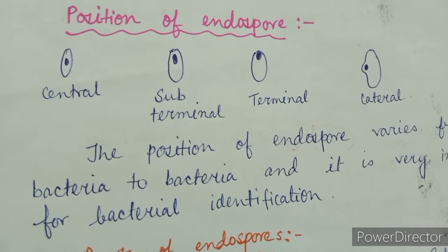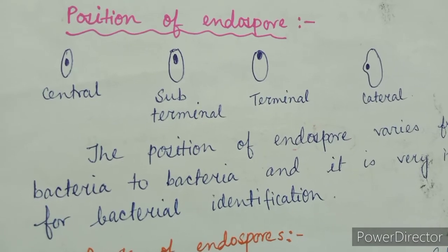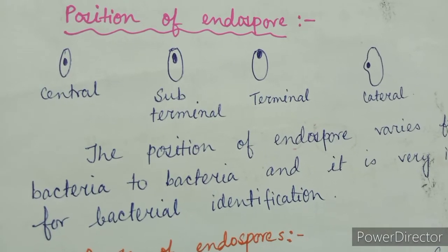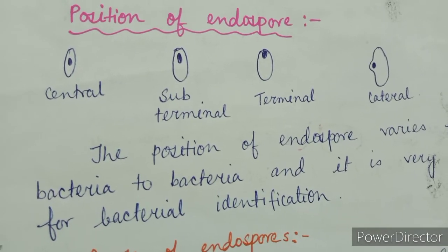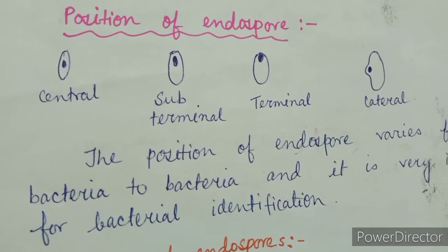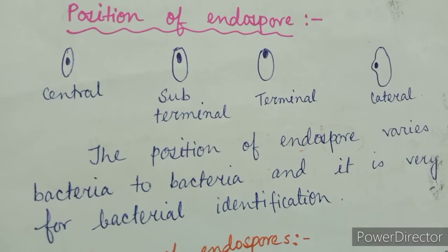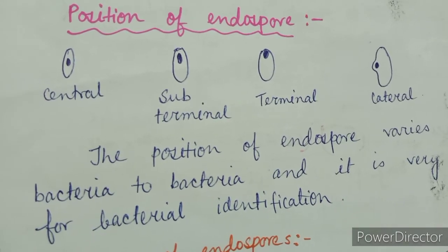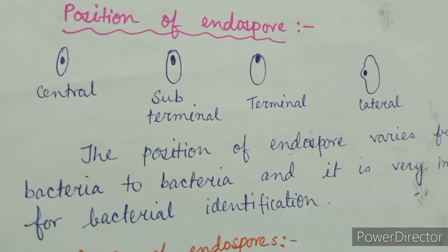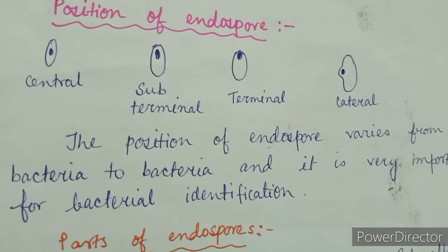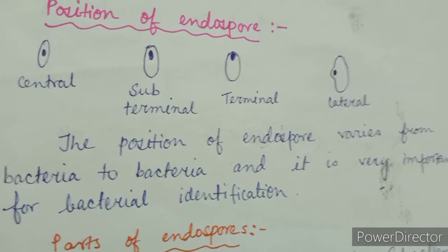The third position is terminal. Terminal endospores are seen at the poles of the cell. The fourth is lateral — lateral endospores are seen occasionally and are situated at one side of the cell.